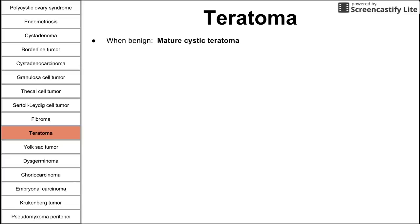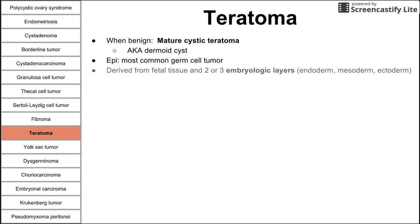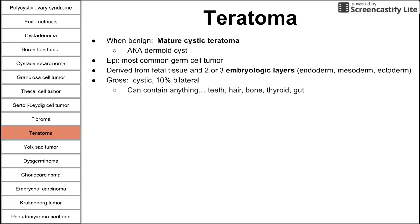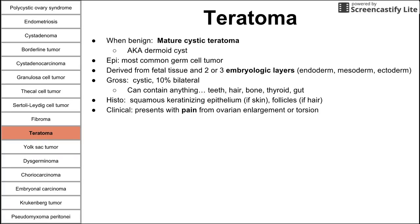Next is teratoma. Mature cystic teratomas are benign, also called dermoid cysts. This is the most common germ cell tumor, derived from fetal tissue containing two or three embryologic layers — endoderm, mesoderm, and ectoderm. Grossly, you see a cystic lesion that is bilateral 10% of the time. These can contain teeth, hair, bone, thyroid, gut, and all kinds of tissues. Histology shows squamous keratinizing epithelium, and features depend on which embryological layers are present. Clinically, patients present with pain from ovarian enlargement, and if there is no immature component, it is benign.